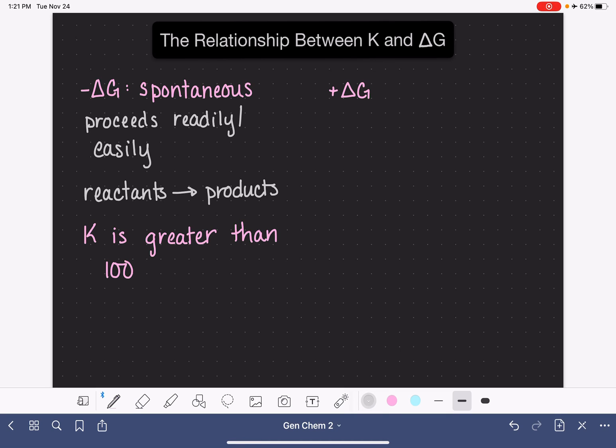And another way that we would phrase this is that the reaction or the process favors the products, meaning that because this reaction is occurring readily, it's occurring easily. We're moving from the right side to the left side. Because it's spontaneous, we have a large amount of products, which results in a high value of equilibrium constant K.